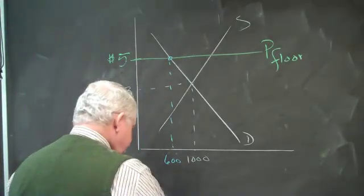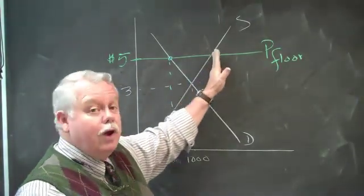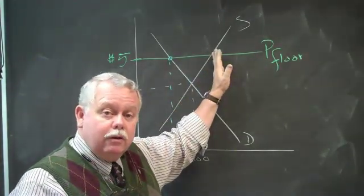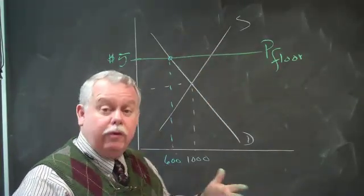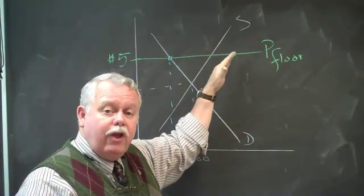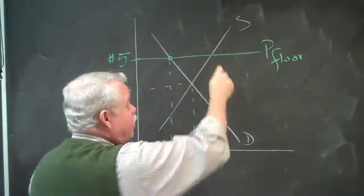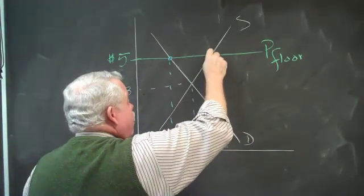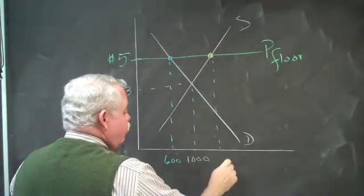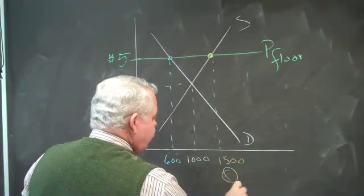But what about the sellers? Well, now maybe we observe that seeing higher prices for milk, the milk producers produce more milk. That's the law of supply. As the price rises, they offer more for sale. And so as we read from this price over to the supply curve, here's where we are. This represents the quantity supplied. Let's call that 1,500 gallons. That's the quantity supplied. 600 is the quantity demanded.